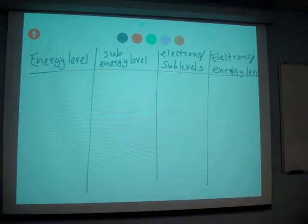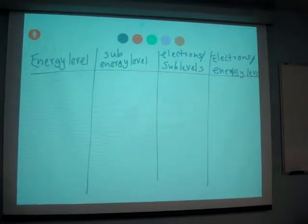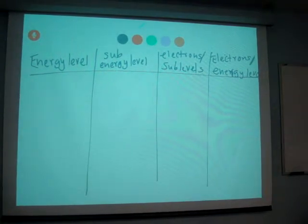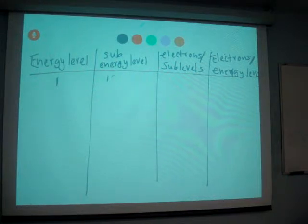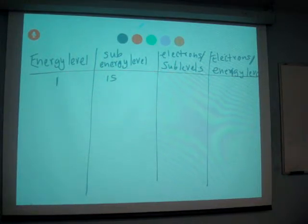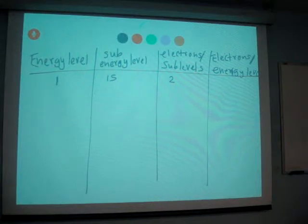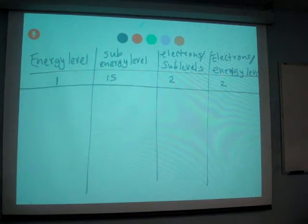So energy levels. If energy level is 1, then sub level is only 1s. Maximum electron is 2 for that sub level and maximum capacity for that energy level is only 2.